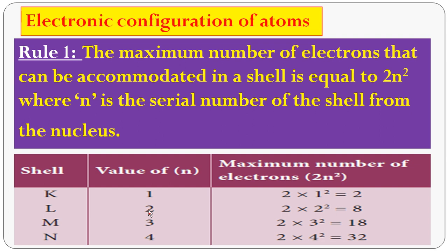For the L shell, N equals 2: 2 × 2² equals 2 × 4 equals 8 electrons. For the M shell, N equals 3: 2 × 3² equals 2 × 9 equals 18 electrons. For the N shell, N equals 4: 2 × 4² equals 2 × 16 equals 32 electrons. So the first shell contains 2 electrons, the second shell 8, the third shell 18, and the fourth shell 32.